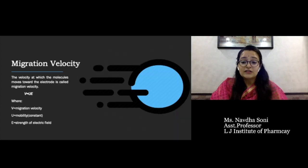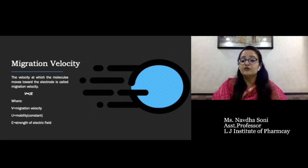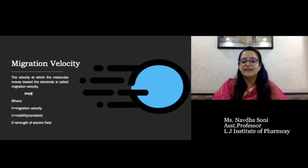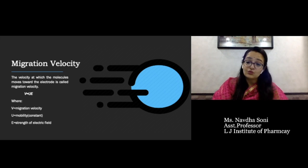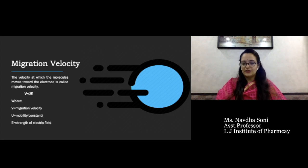Another terminology is migration velocity — the velocity at which molecules move toward the electrode is called migration velocity. V = U × E, where U is the mobility and E is the strength of the electric field.